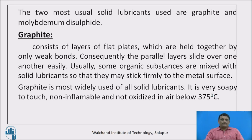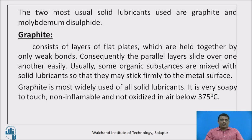The two most usual solid lubricants used are graphite and molybdenum disulfide. Graphite consists of layers of flat plates which are held together by only weak bonds. Consequently, the parallel layers slide over one another easily. Some organic substances are mixed with solid lubricants so that they may stick firmly to the metal surface. Graphite is most widely used of all solid lubricants; it is very soapy in nature, non-inflammable, and not oxidized in air below 375 degrees centigrade.